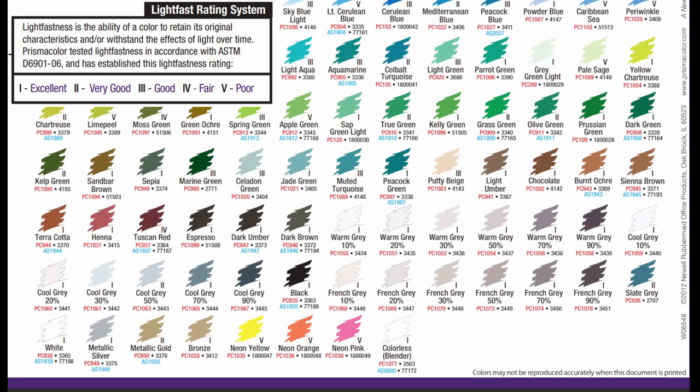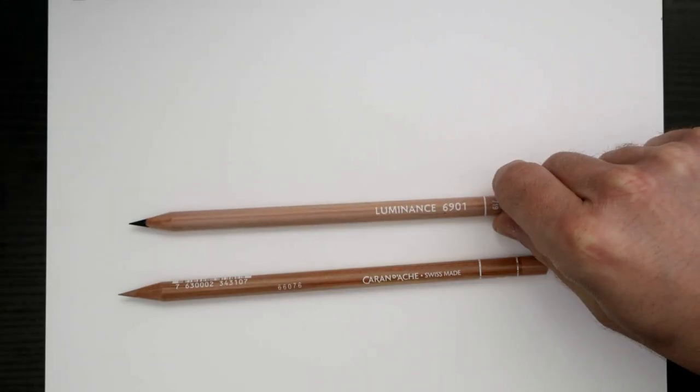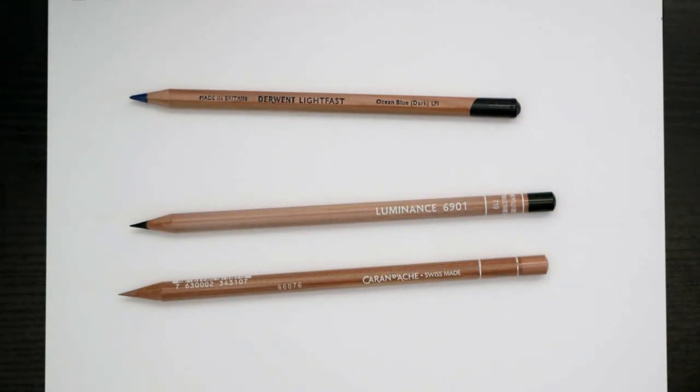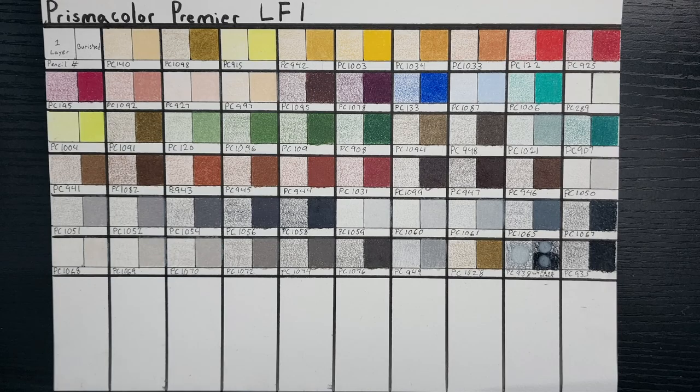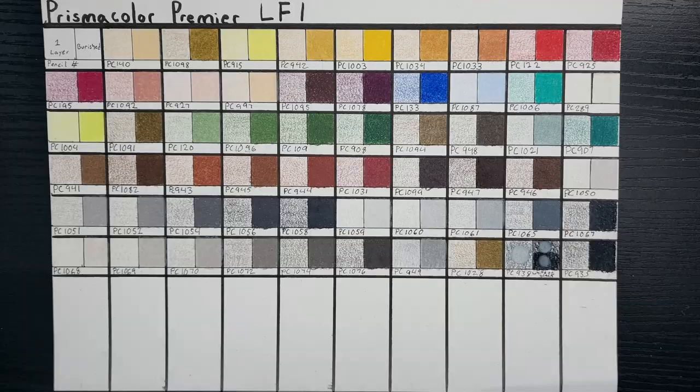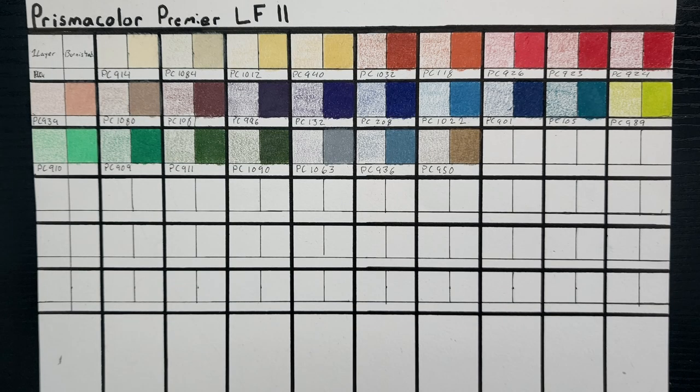Of the 150 colors, 80 are rated Lightfast according to the 6901 standard, the same standard that Caran d'Ache uses for Luminance and Derwent uses for their Lightfast lines. These are the swatches I made for the Lightfast colors. I have color graded them to be accurate. As you can see, more are LF1 than LF2. This means these colors will last decades without fading under museum-like conditions.